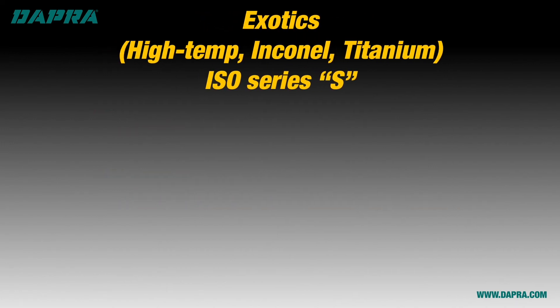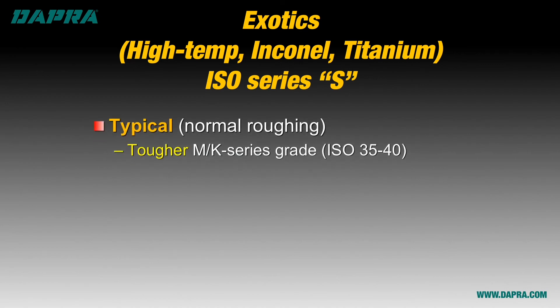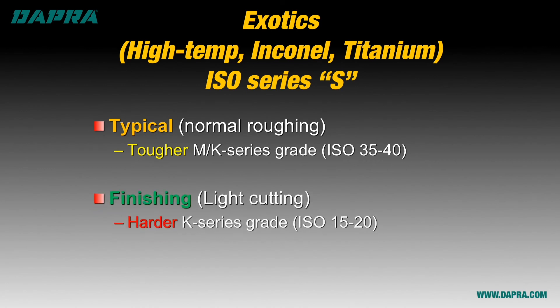Exotics are materials that involve the highest levels of heat during machining, as well as a strong tendency to built-up edge or cold welding of the material to the cutting edge. These materials in the ISO-S series generally respond best to a tough K range carbide grade. Coolant will virtually always be necessary here, as well as a high-temperature coating. If doing a light finishing style cut, a harder carbide grade still in the K range may be usable.